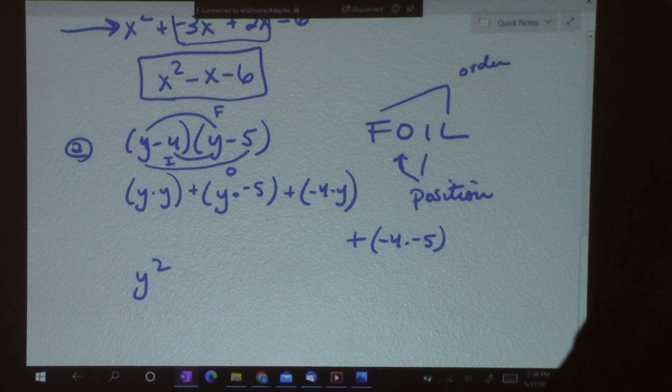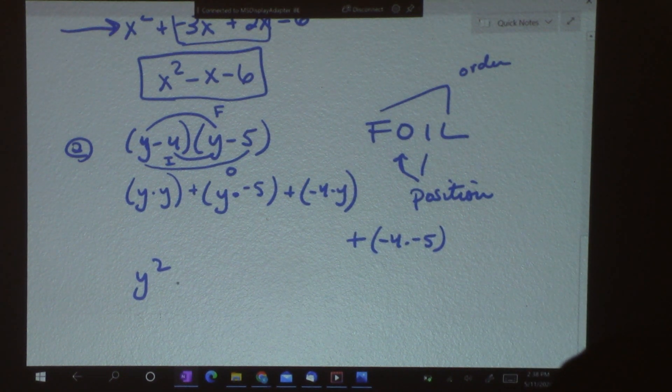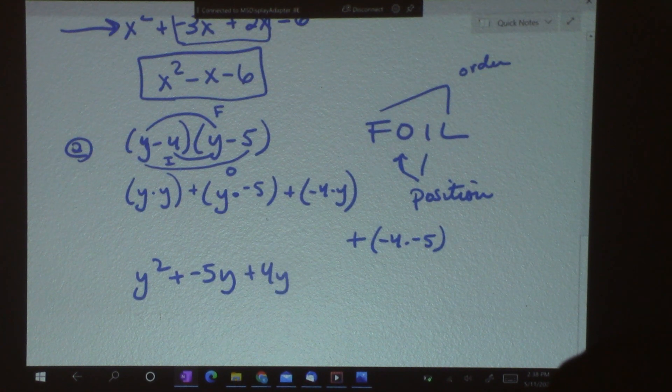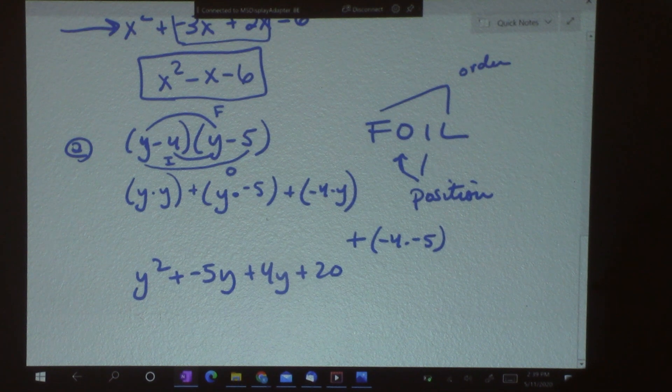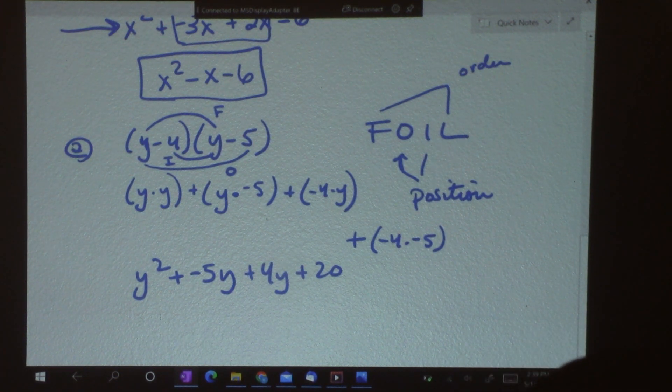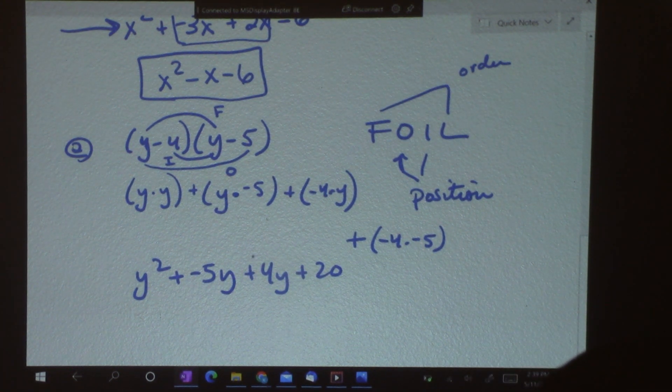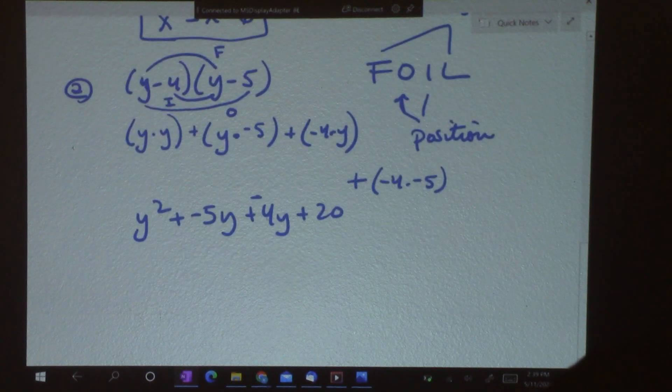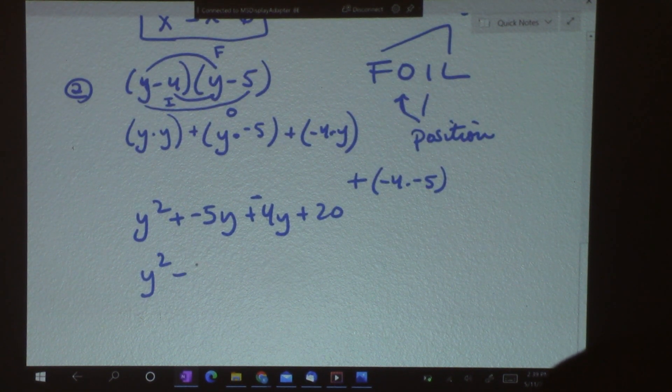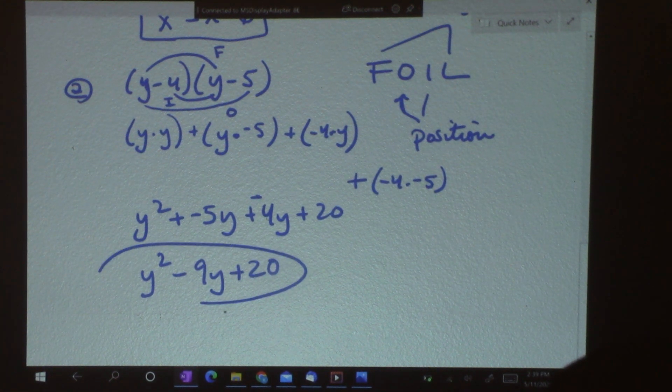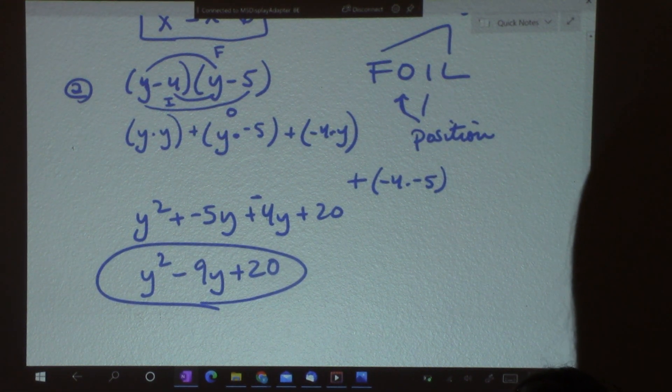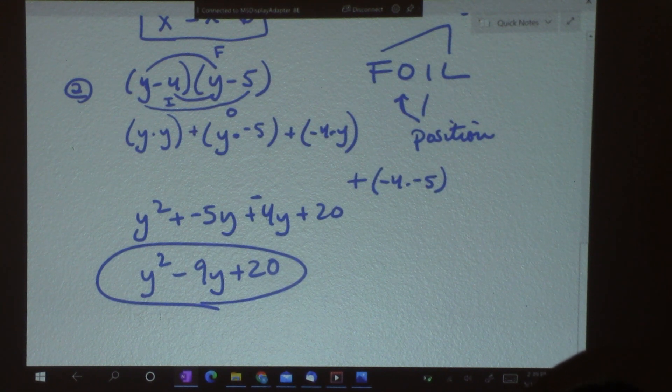So, y times y is y squared. Y times negative 5 is negative 5y. Plus negative 4y. Plus 20. Oh, no. I'm sorry. That's negative 4y. So, then I have negative 5y and negative 4y is negative 9y plus 20. And there's my answer. So, if you remember FOIL, you'll be just fine.